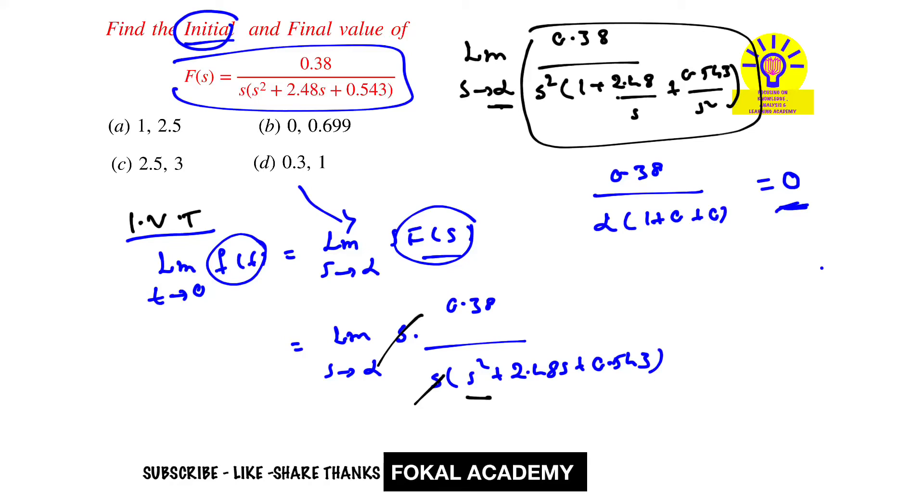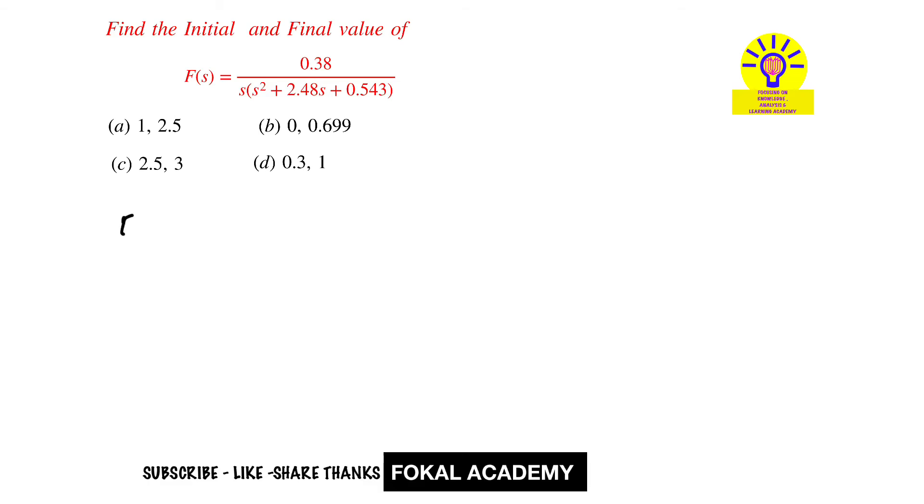Now, how do we find the final value for F(s)? According to the final value theorem, lim(t→∞) f(t) = lim(s→0) s·F(s).